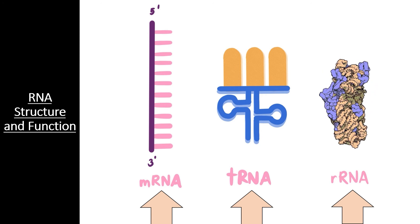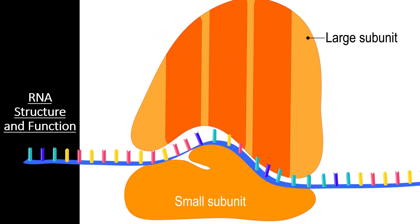Ribosomes have a large subunit and a small subunit which come together around an mRNA molecule. The ribosomal RNA and proteins have specific areas that bind the mRNA molecule, and areas that will catalyze the formation of a new protein chain. This is where transfer RNAs come into play.